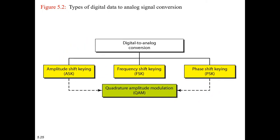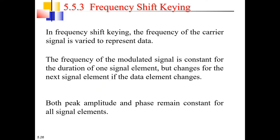Welcome back students. This time let us learn about frequency shift keying with an example. In frequency shift keying, the frequency of the carrier signal is varied to represent data. The frequency of the modulated signal is constant for the duration of one signal element but changes for the next signal element if the data element changes. Both peak amplitude and phase remain constant for all signal elements.